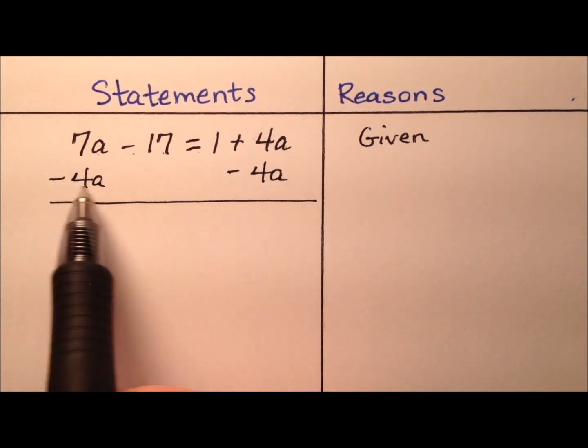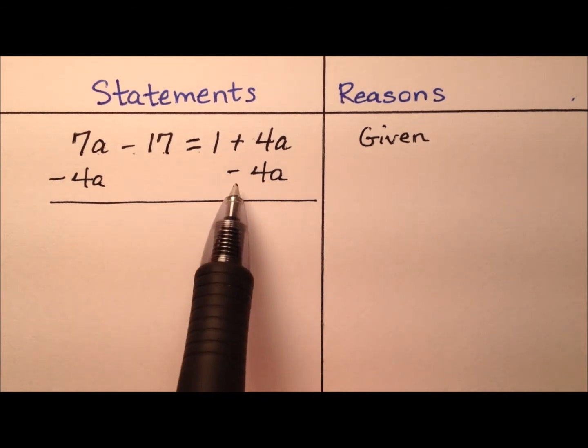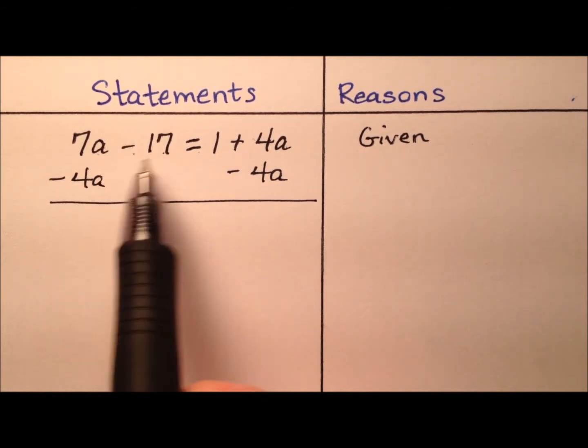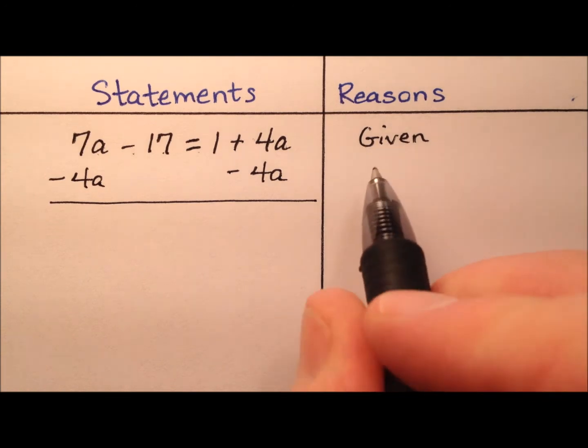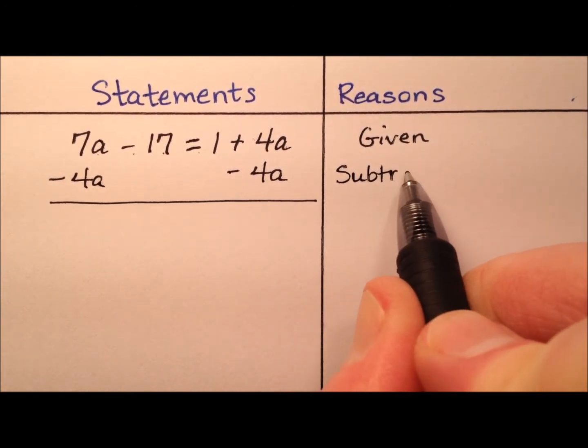What reason can we have for doing this, or what justification do we have? Well, we're subtracting this 4a term from both sides of the equation, so we're going to call this the subtraction property of equality.